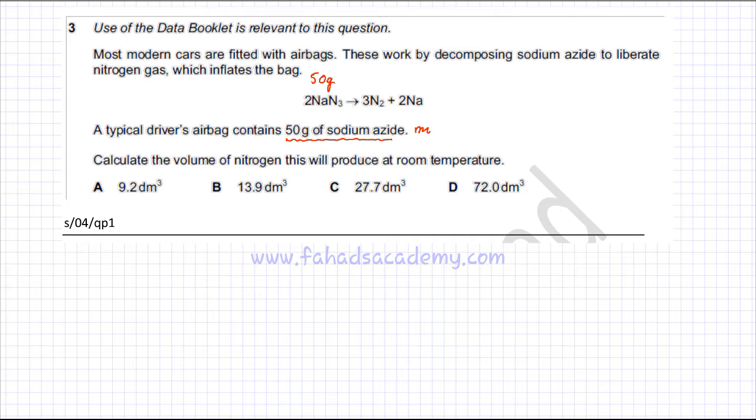Moles of sodium azide would be mass, 50 grams divided by the molar mass of sodium azide which is going to be Na is 23. 23 and there are 3 nitrines, that's 14 into 3.